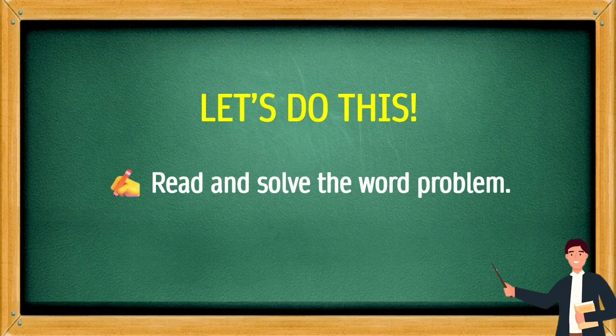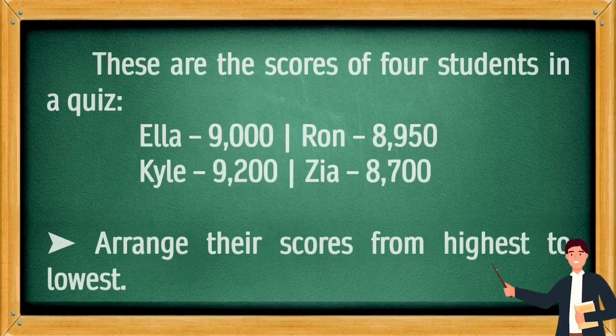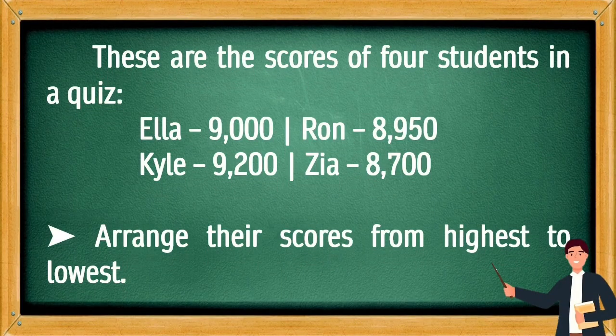Let's do this! Read and solve the word problem. These are the scores of 4 students in a quiz: Ella — 9,000; Ron — 8,950; Kyle — 9,200; Zia — 8,700. Arrange their scores from highest to lowest.